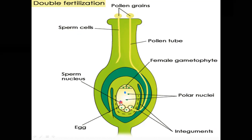One of the male gametes moves towards the egg cell, and the nucleus of the male cell fuses with its nucleus, thus completing syngamy or fertilization. This results in the formation of a diploid cell — that is, the zygote.